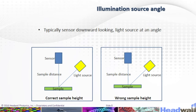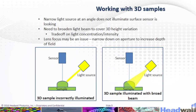Here we have the illumination source angle. Typically the sensor is downward looking with the light source at an angle. The diagram on the left-hand side shows the correct sample height, while the right-hand side shows the wrong sample height. When working with 3D samples, a narrow light source at an angle may not illuminate the surface the sensor is looking at. You need to broaden the light beam to cover 3D height variation, though this is a trade-off on light concentration and intensity. Lens focus may be an issue; narrow down the aperture to increase depth of field.